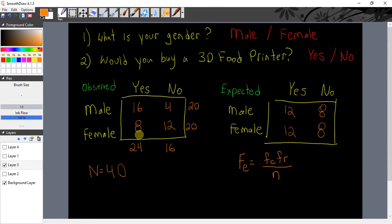So you do that for each cell. It's kind of obvious. You have 24 people that said yes to would you buy a 3D food printer, and if there's no relationship between males and females, then you would expect half of these people to be males and half of these people to be females. So you'd expect 12 males to say yes and 12 females to say yes. Similarly, 16 people said no in total, so you would expect if there was no relationship between males and females that there would be eight males that said no and eight females that said yes. That's what you would expect if there was no relationship. So that's what we have to do for our pen and paper chi-square method.